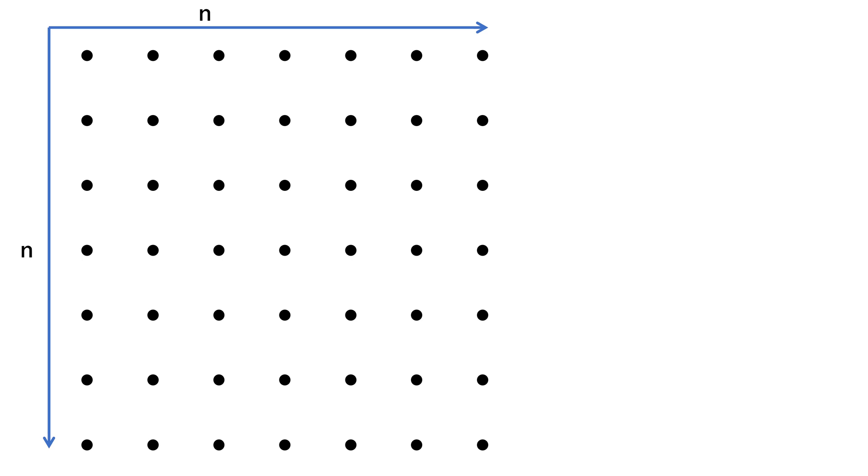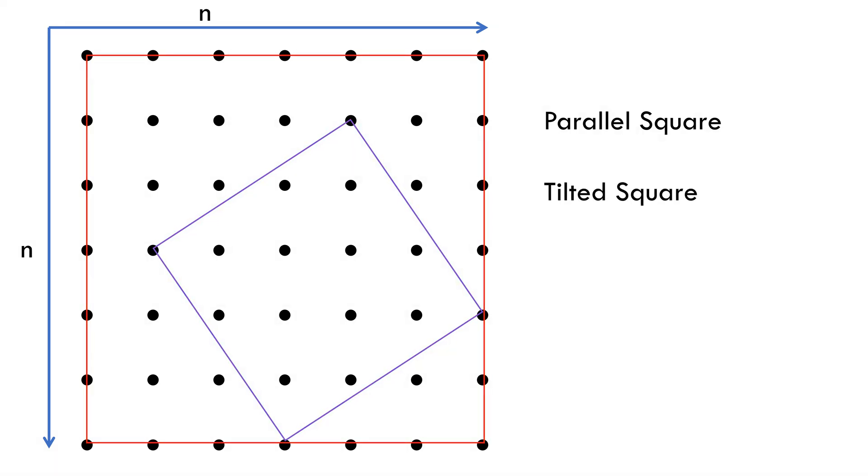As per the question, the squares can either be like this, with sides parallel to the sides of the outermost square - we can call these parallel squares for easy explanation. Or, like this, with sides not parallel to the sides of the outermost square - we can call these tilted squares.